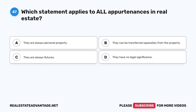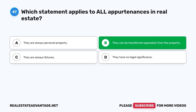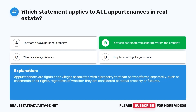Question 47. Which statement applies to all appurtenances in real estate? A. They are always personal property. B. They can be transferred separately from the property. C. They are always fixtures. D. They have no legal significance. The correct answer is B. Appurtenances are rights or privileges associated with a property that can be transferred separately, such as easements or air rights, regardless of whether they are considered personal property or fixtures.